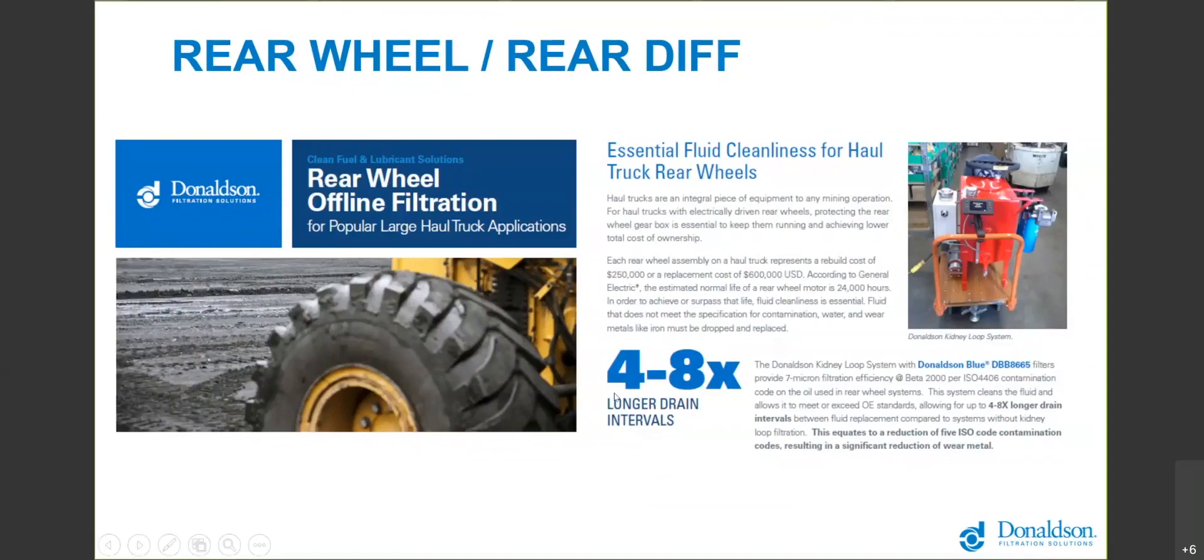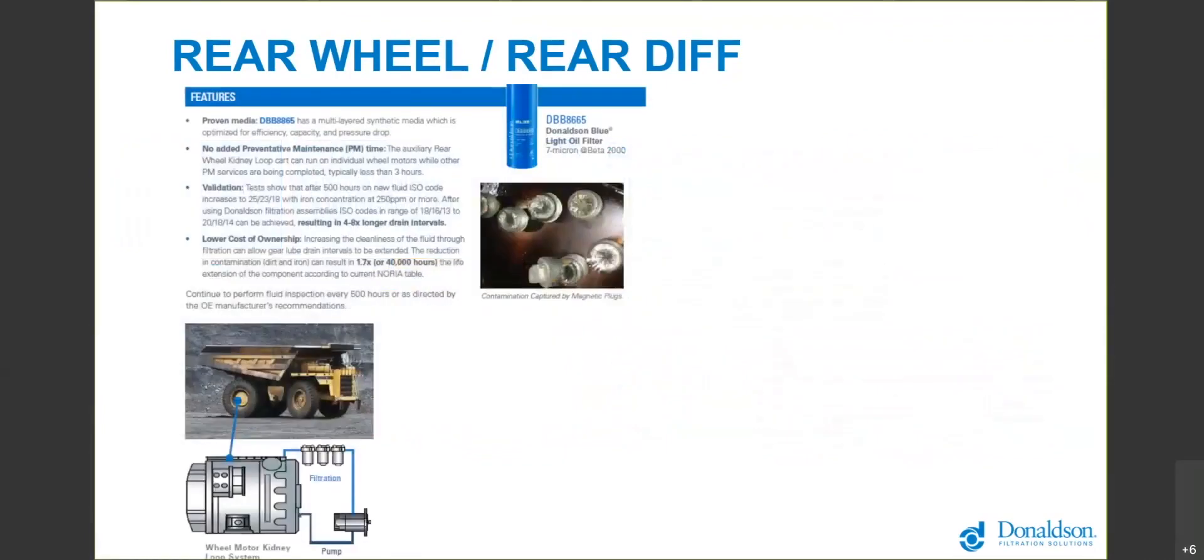With the addition of a kidney loop at the shop, they were able to extend the drain interval on average four and up to eight times the duration of time, 2,500 hours from 500 to 2,500 hours. In these rear wheels there are magnetic plugs, just like your transmission pan in your car has a magnetic plug, but these were severely contaminated. We were seeing ISO codes in the 300 plus per million range, and after our kidney loop we were able to drop the ISO cleanliness code by five numbers.